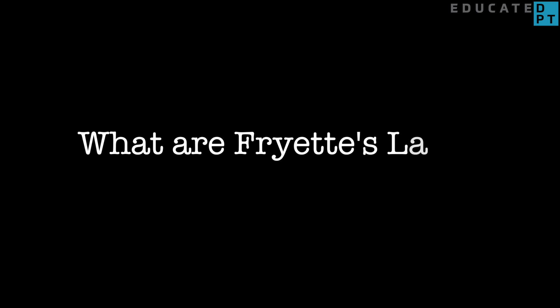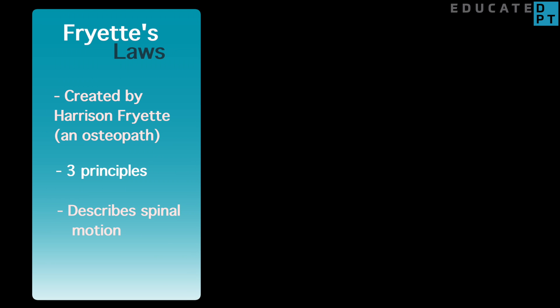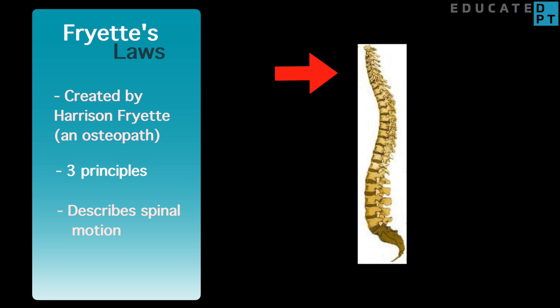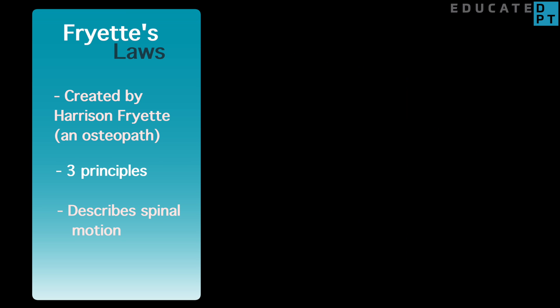What are Freyat's Laws? Freyat's Laws are a set of three guiding principles meant to describe specific motions of the cervical, thoracic, and lumbar spine. While in practice these laws are seen as simplistic, they do provide a framework from which a clinician can work.